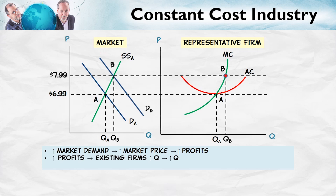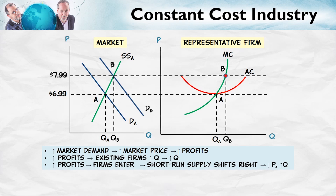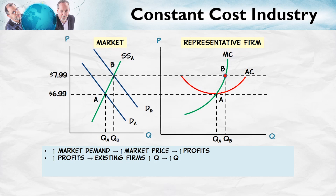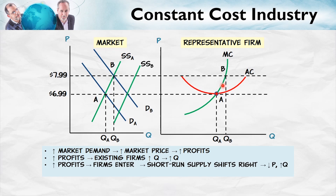Profits in the short run attract new entry. As we get new entry, the short-run supply curve expands and shifts outward, pushing down the price until we reach a new long-run equilibrium, and until profits are zero. Looking at the representative firm: as profits attract entry, entry pushes the price down. As the price goes down, each firm contracts along its marginal cost curve. We can now see why the long-run supply curve is flat — because we begin at point A at the minimum point of the average cost curve, and we end at point C, which is also at the minimum point of the average cost curve. So the long-run supply curve is flat at the minimum point of the average cost curve.